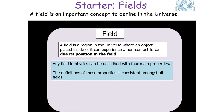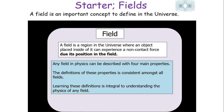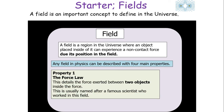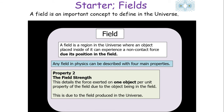Any field in physics can be described with four main properties, and these definitions are consistent amongst the different fields — gravitational, electrical, magnetic. The first property is the force law, which details the force exerted between two objects inside the field, and it's usually named after the famous scientist who worked in that particular area.